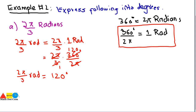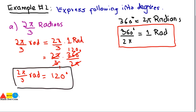This is how you can convert angles from radians into degrees and from degrees into radians, by understanding the relationship between radians and degrees. That's all from today's lecture.